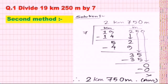We bring down the next digit, which is 2, making it 52. Then we multiply and subtract, getting remainder 3. We bring down the next number 5, giving 35. 7×5=35. After that we bring down 0, and 7×0=0. Our operation is complete. The part of the quotient after the kilometer section corresponds to the meter portion. So the answer is 2 kilometer 750 meter.